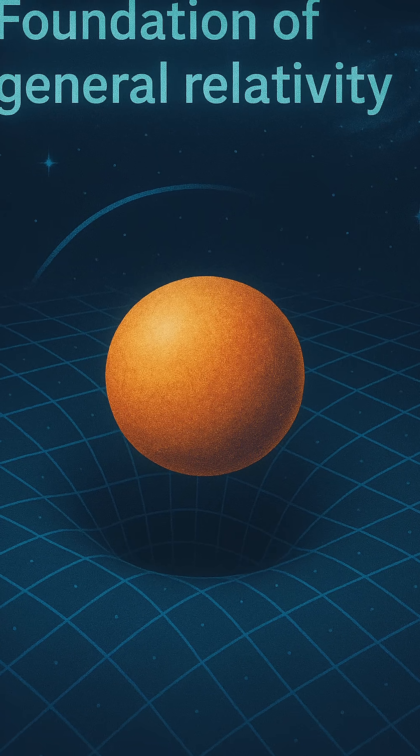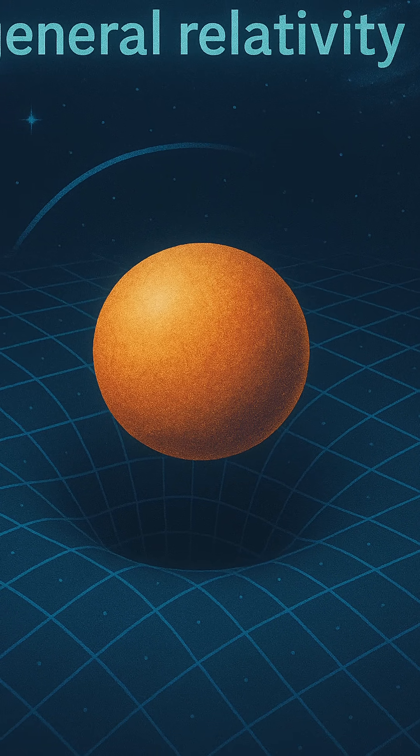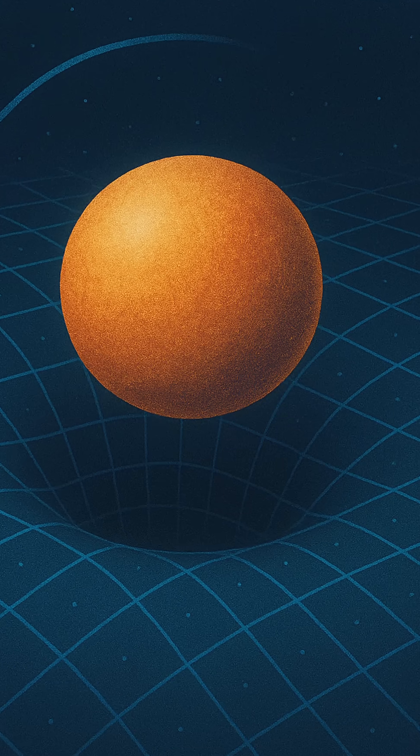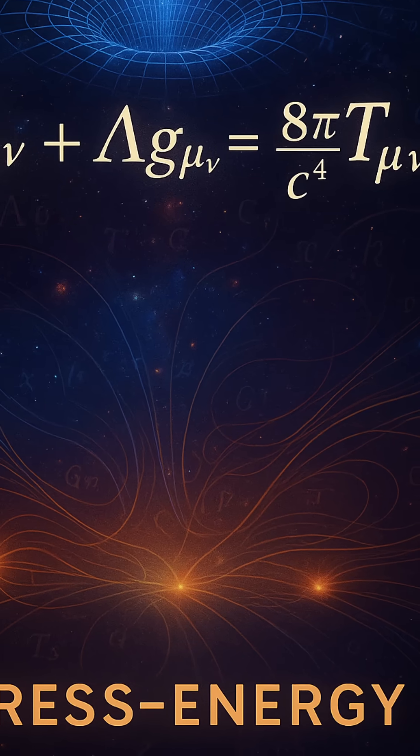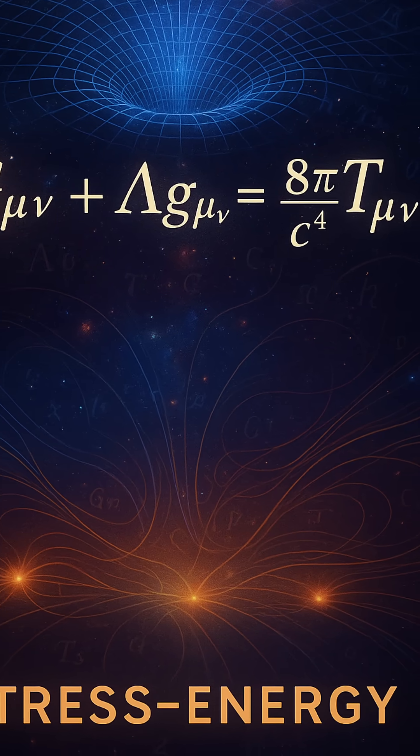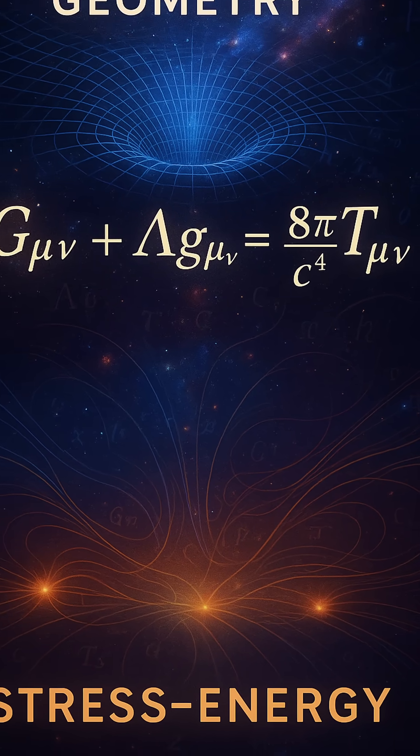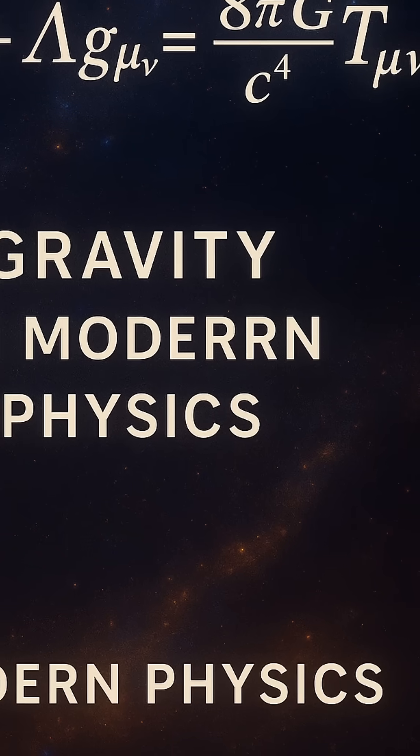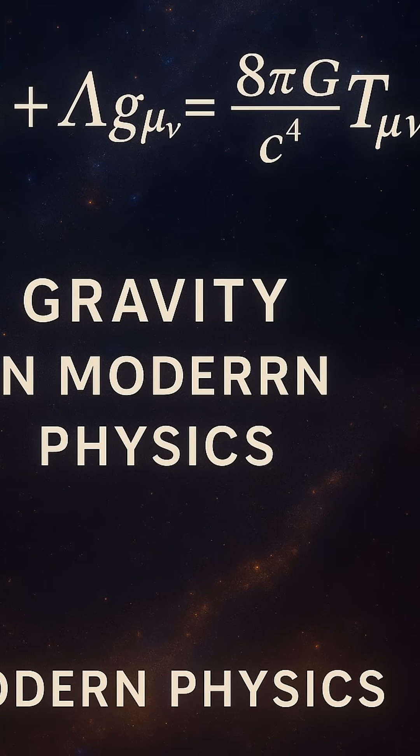The Einstein field equation links the geometry of spacetime, how it bends and twists, with the distribution of matter and energy within it. In simple terms, mass and energy tell spacetime how to curve, and that curved spacetime tells objects how to move. This concept has been confirmed time and again through both observation and experiment.